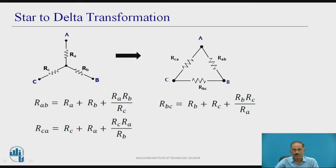The formulas are: RAB = RA + RB + (RA × RB) / RC. Similarly, RBC = RB + RC + (RB × RC) / RA. And RCA = RC + RA + (RC × RA) / RB. Once you know the values of star connections RA, RB, RC, the equivalent delta connections RAB, RBC, and RCA can be calculated.